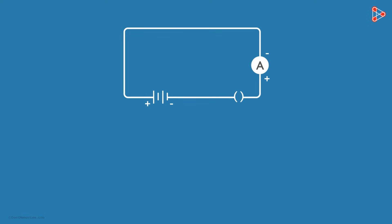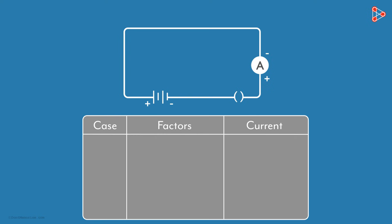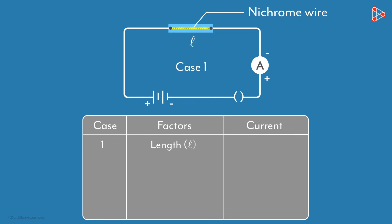Take a small electric circuit like this one, which has a plug key, a power source, and an ammeter. In the first case, connect a nichrome wire between these two points. Let the length of this nichrome wire be lowercase L. Now plug the key and measure the reading in the ammeter.